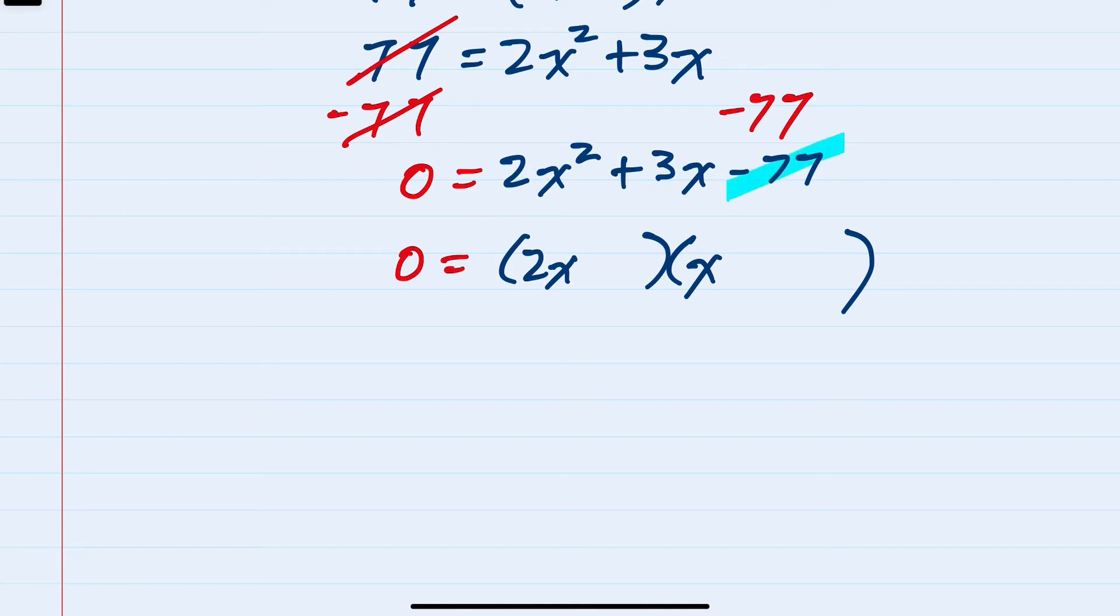And then looking at the last term, the minus 77, that would have to be either 1 and 77 to multiply to be 77, or 7 and 11. With those possibilities in mind, I would try plugging them in, multiplying the inside and the outside, to see which one gives me the positive 3x as a middle term.